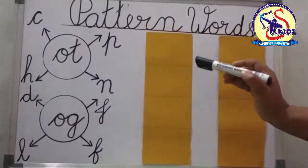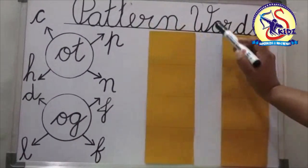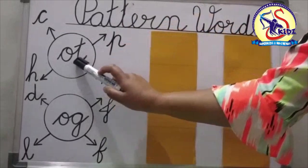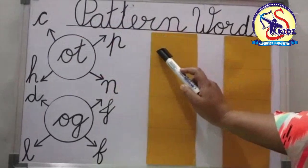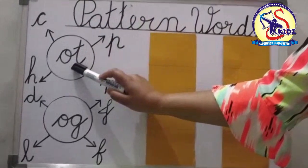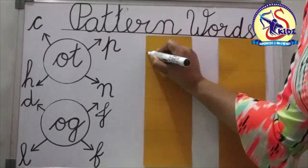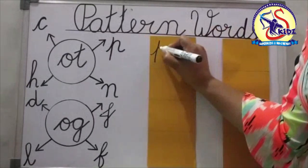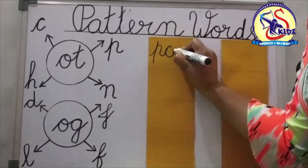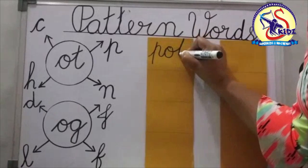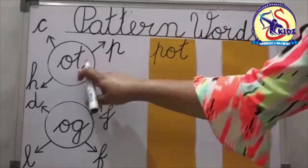Now kids we will do our next exercise: pattern words. Now see kids, O-T — which pattern is given? O-T, and here are some letters. First of all we will write the letter, then we will join the pattern to make new words. We will write our letter P and then join our pattern O-T. Now we will get the word P-O-T, pot.